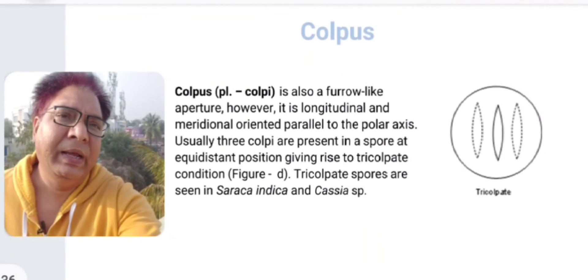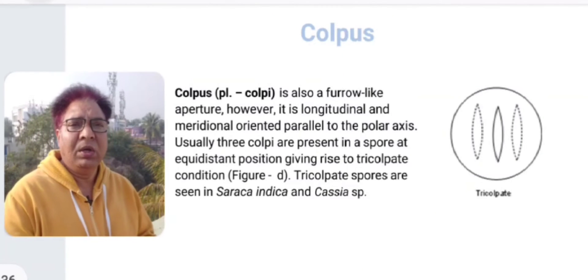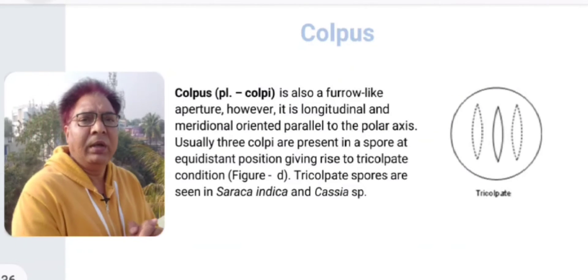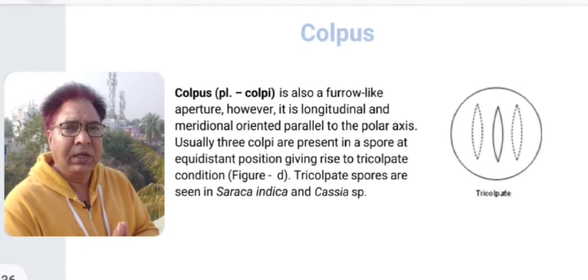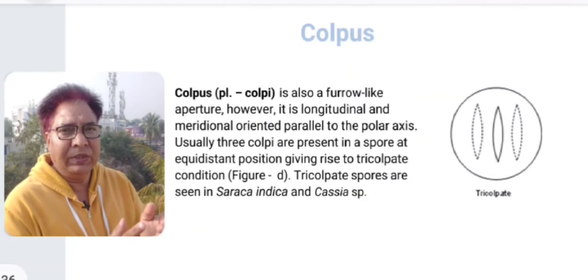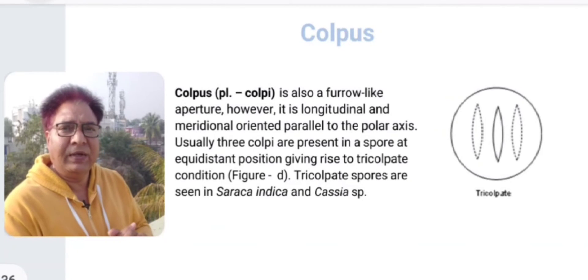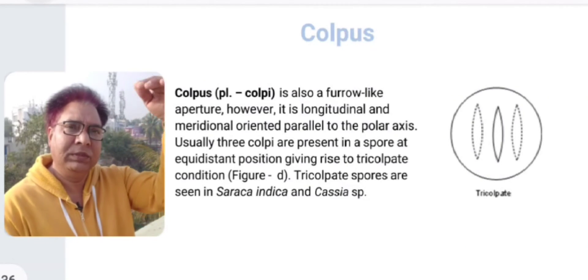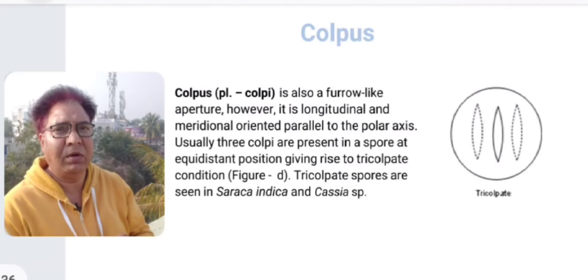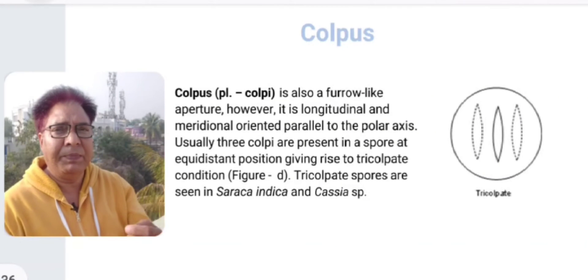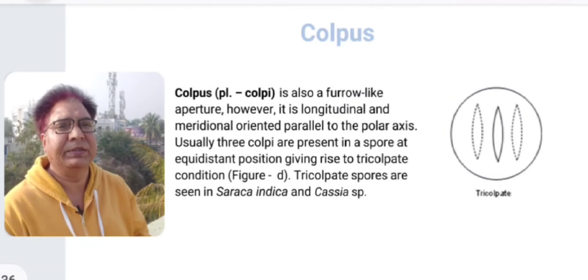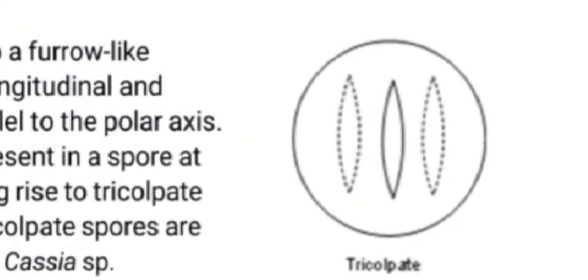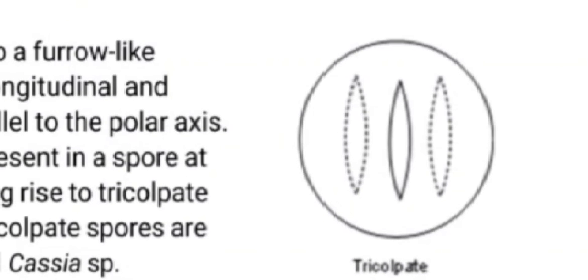Now, colpi — that is the plural of colpus — are also furrow-like apertures. Usually they are present as three equidistantly located, elongated furrow-like apertures that are parallel to the polar axis. You can see the proximal pole at the top, the distal pole at the bottom, and the apertures running along the polar axis. This condition is called tricolpate. There could be various variations: syncolpate and parasyncolpate conditions, which we will see later.